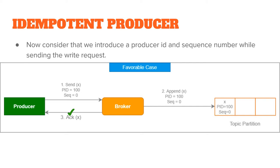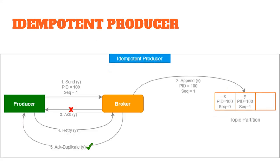While sending any write requests to the broker, the producer introduces a producer ID as well as a sequence number for that request. When the message is written by the broker into the Kafka topic, it also includes the producer ID and the message sequence number. After a successful write, the broker acknowledges the producer. Now in the failed acknowledgement case, when the producer retries to write to the Kafka topic, the broker can easily figure out that this producer ID has already sent a message with a given sequence ID and it has already been successfully written. Therefore the broker sends back a duplicate acknowledgement without writing any more messages, and in this way our problem of duplicate writes into Kafka is solved.